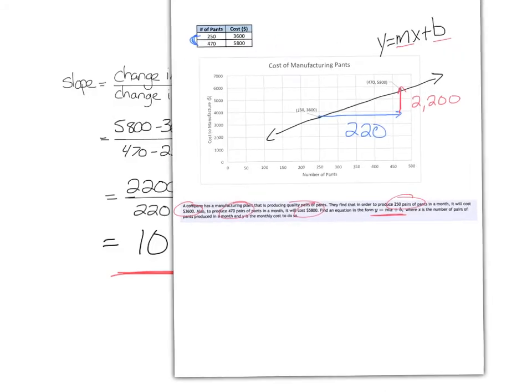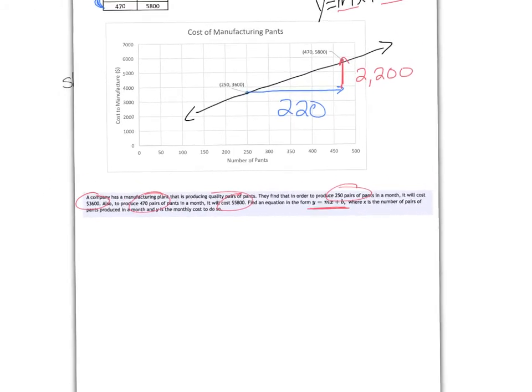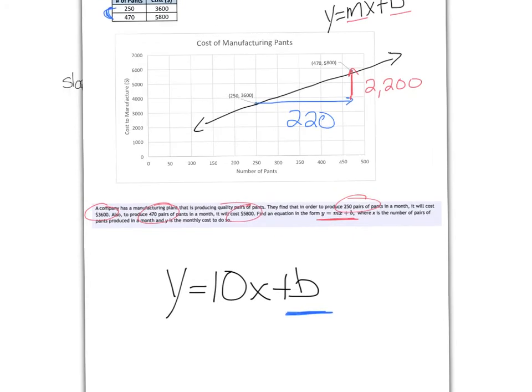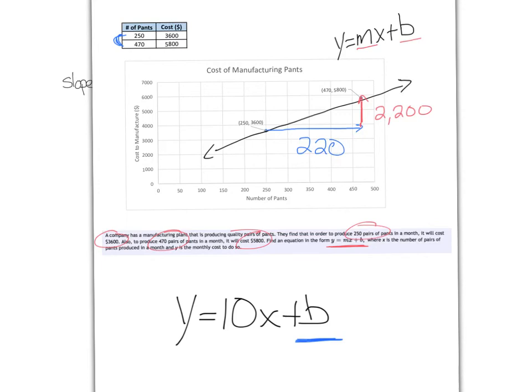So now we have a good portion of our linear model: Y equals 10X plus B. The next step is to figure out what this B value is. And we are going to do that by plugging in either one of these pieces of information for X and Y. In this case, remember that X represents the number of pants produced, and Y represents the cost.